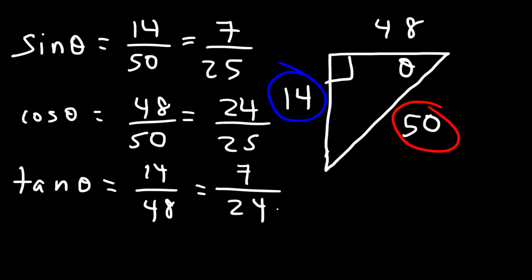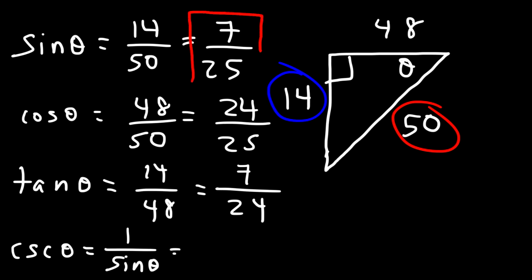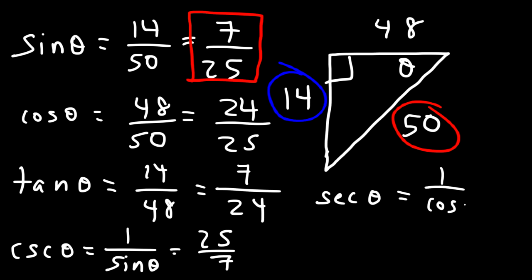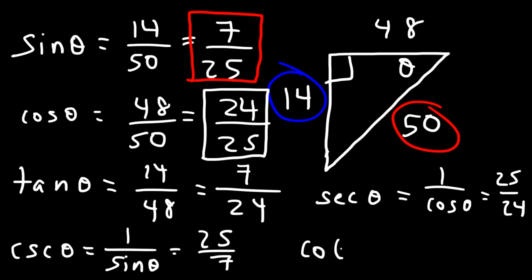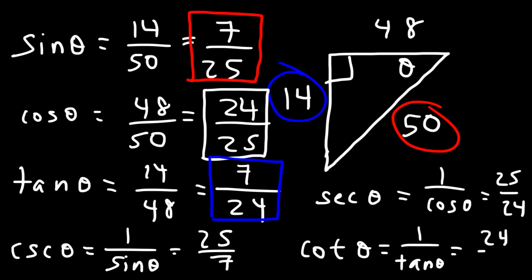Now, what about secant, cosecant, and cotangent? Cosecant is the reciprocal of sine. If sine = 7/25, then cosecant = 25/7. Secant is the reciprocal of cosine. If cosine = 24/25, then secant = 25/24. Cotangent is the reciprocal of tangent. If tangent = 7/24, then cotangent = 24/7.